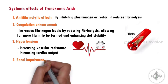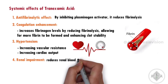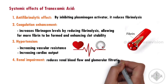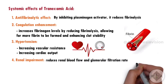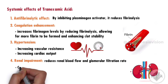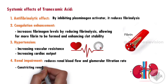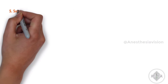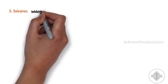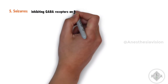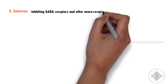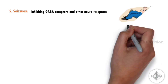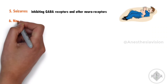Renal impairment: Tranexamic acid reduces renal blood flow and glomerular filtration rate by constricting renal blood vessels, and increasing blood pressure may further reduce renal blood flow. Seizures: Tranexamic acid may cause seizures by inhibiting GABA receptors — an inhibitory neurotransmitter — leading to increased neuronal excitability.